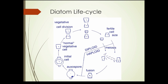This slide shows a diatom life cycle. Starting at the initial cell, that gives us the normal vegetative cell with two halves of a frustule — the smaller bottom half fitting into the larger upper half. When it undergoes vegetative cell division, the bottom half separates from the upper half. Each half then makes a new piece that fits inside it. The one that gets the upper half remains the same size as the original cell.